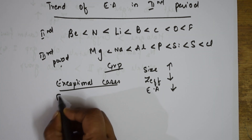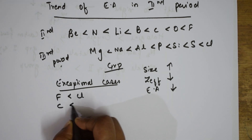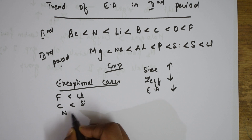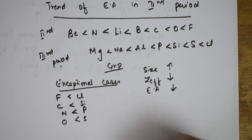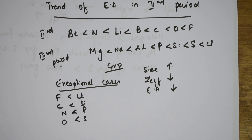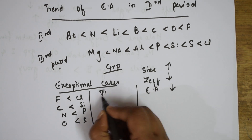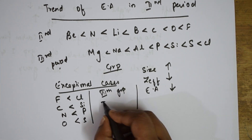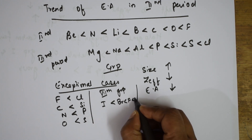Exceptional cases: electron affinity of fluorine is less than chlorine, carbon less than silicon, nitrogen less than phosphorus, and oxygen less than sulphur. This is because in second period elements, the size is very small and electron repulsion is more, making addition of an extra electron difficult. For the seventh group, the order is: iodine < bromine < fluorine < chlorine.